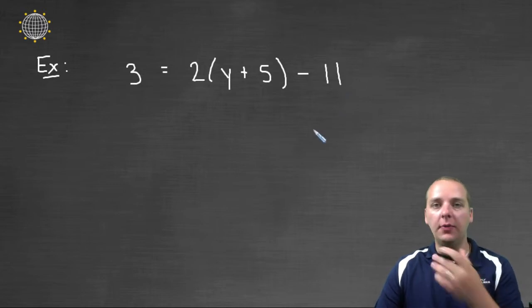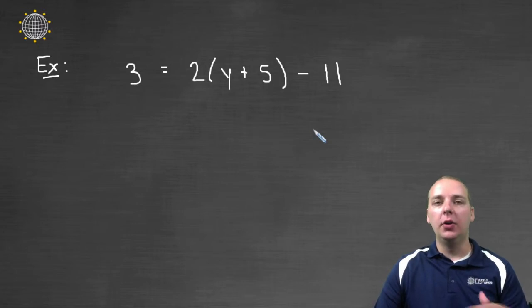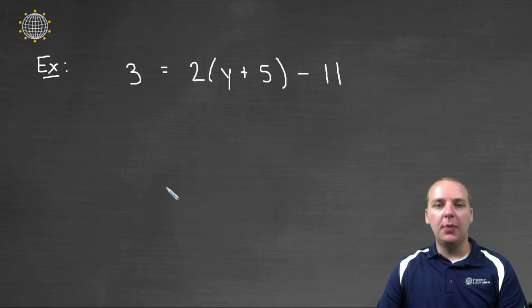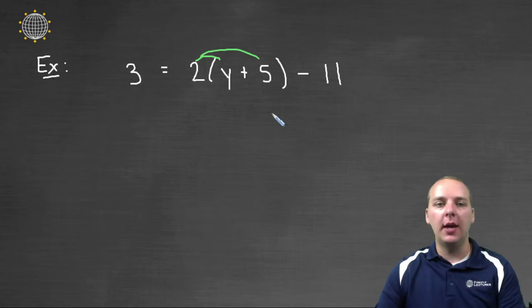I assume we're already familiar with the steps to solve linear equations. If you're not, you can go back and watch our video on how to solve linear equations. Step one is to simplify both sides, which would require us to do things like distribute this 2 and possibly combine any like terms that we have.